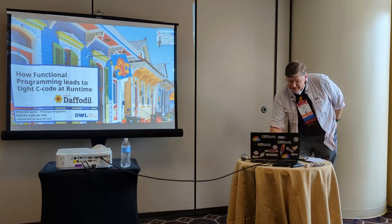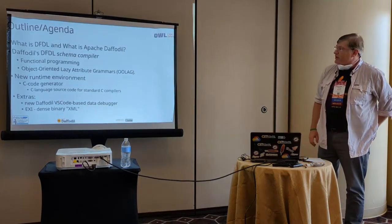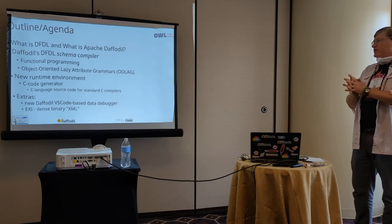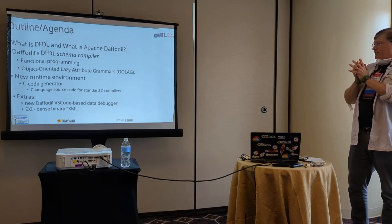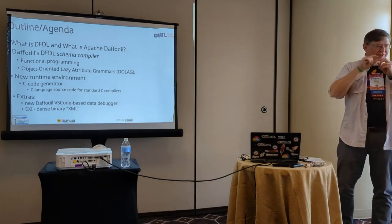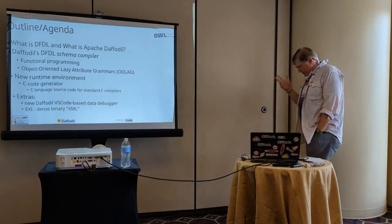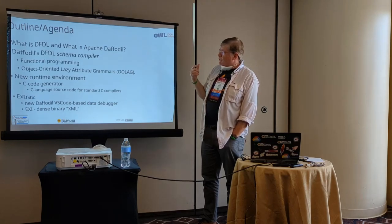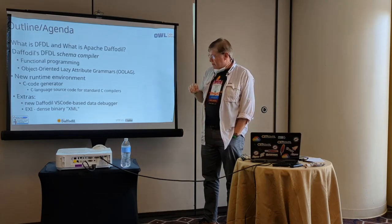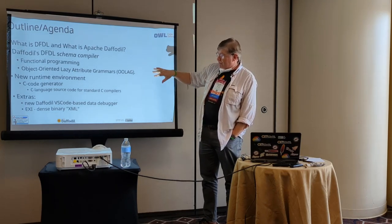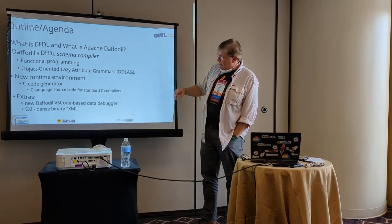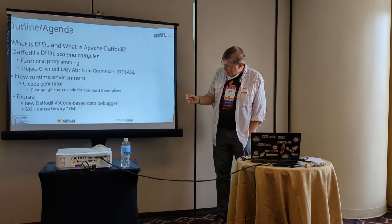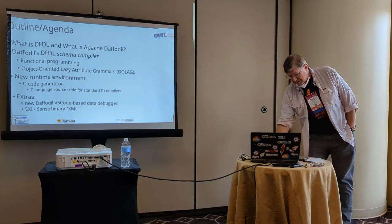What I'm going to talk about — this is not a presentation I've given before, and I think it's probably too long for the time allotted, so I'm going to try to go as quickly as possible. I'm going to do the fastest possible introduction: what is DFDL, what is Apache Daffodil? What I really want to talk about is some things going on inside of Daffodil. Daffodil has a schema compiler for this language called DFDL that uses a number of functional programming techniques. It uses a technique we call OLAG — object-oriented lazy attribute grammars. Then I'll jump over to talk about our new runtime environment, which is a C code generator. It emits C language source code for standard compilers.